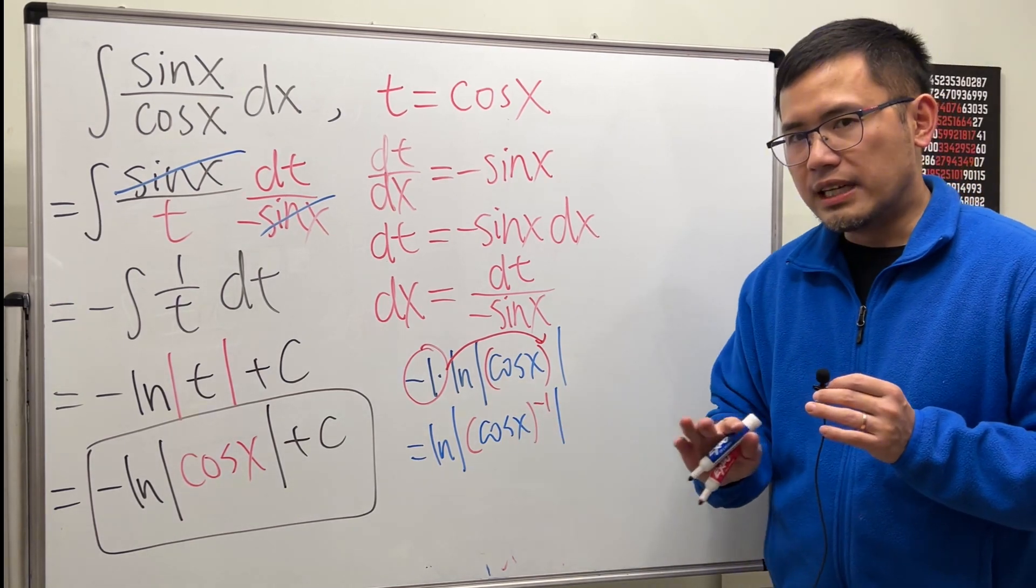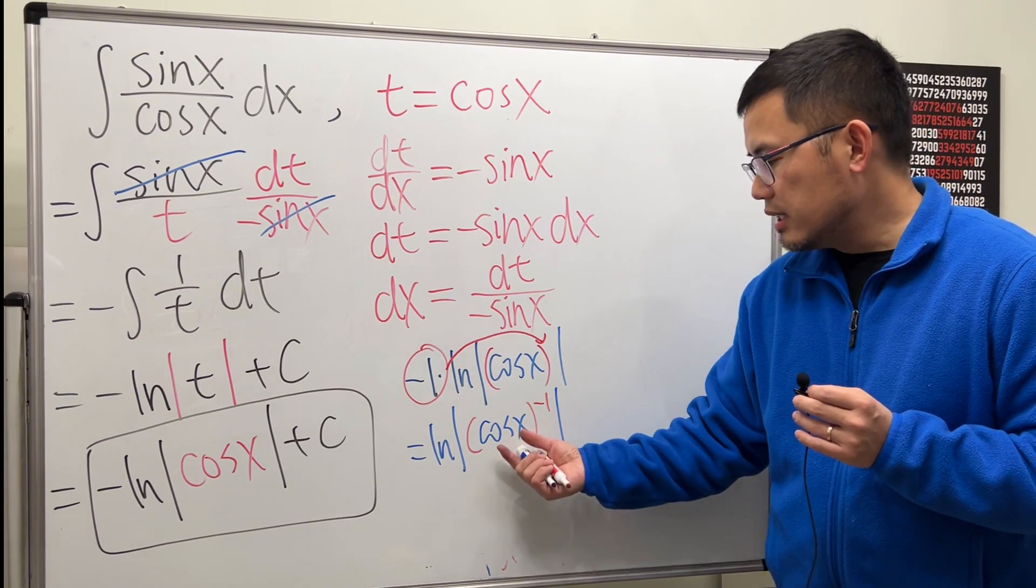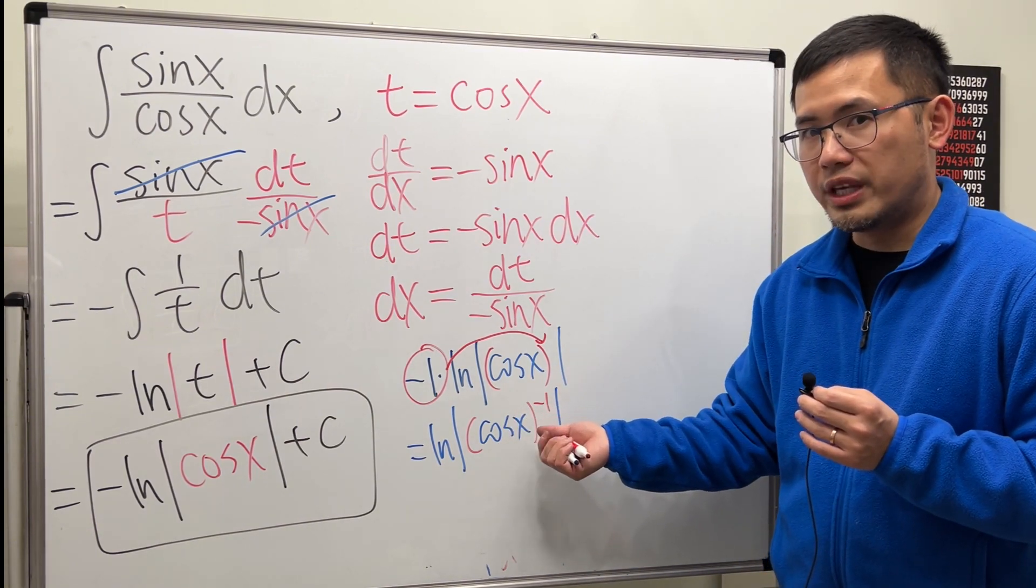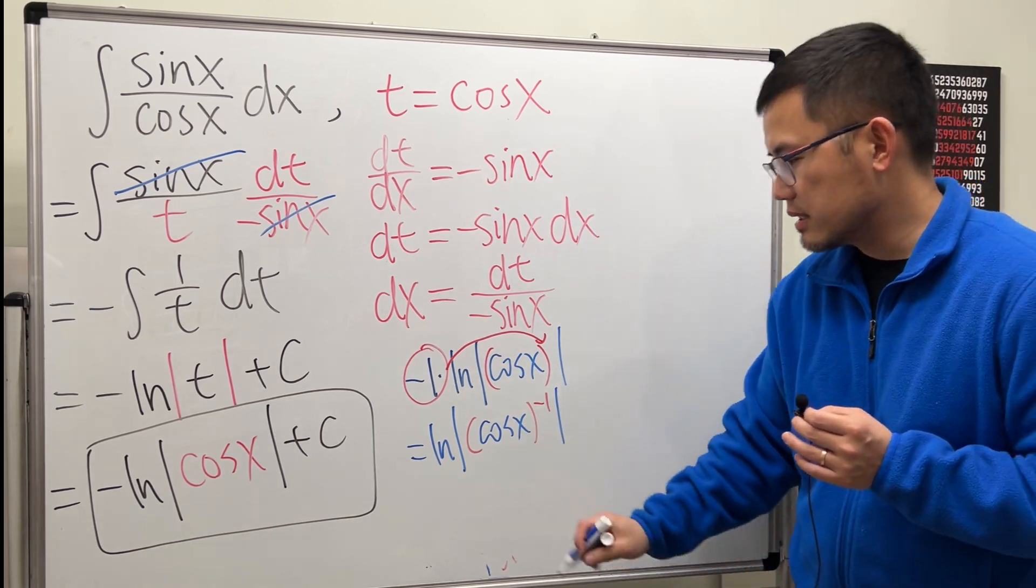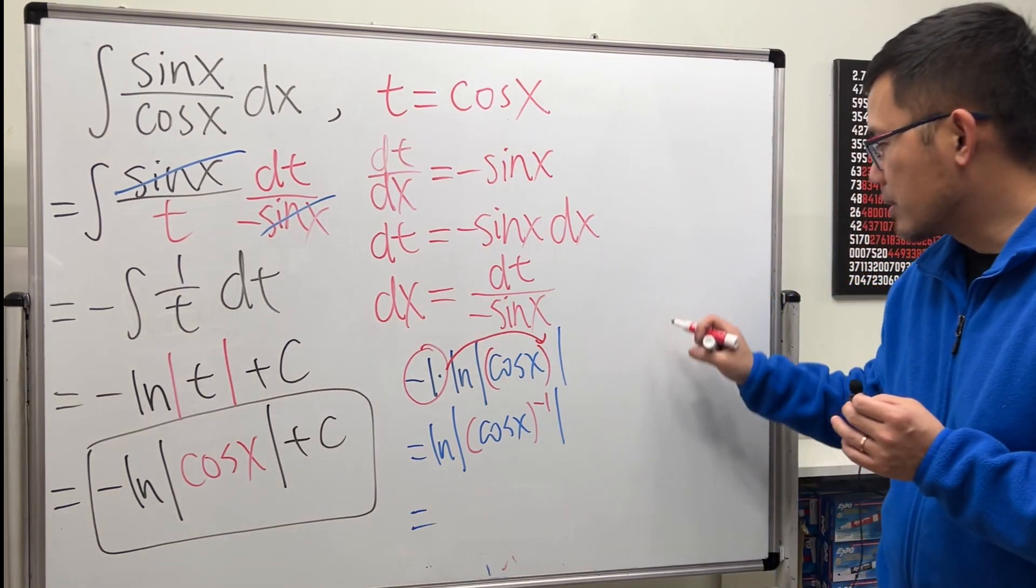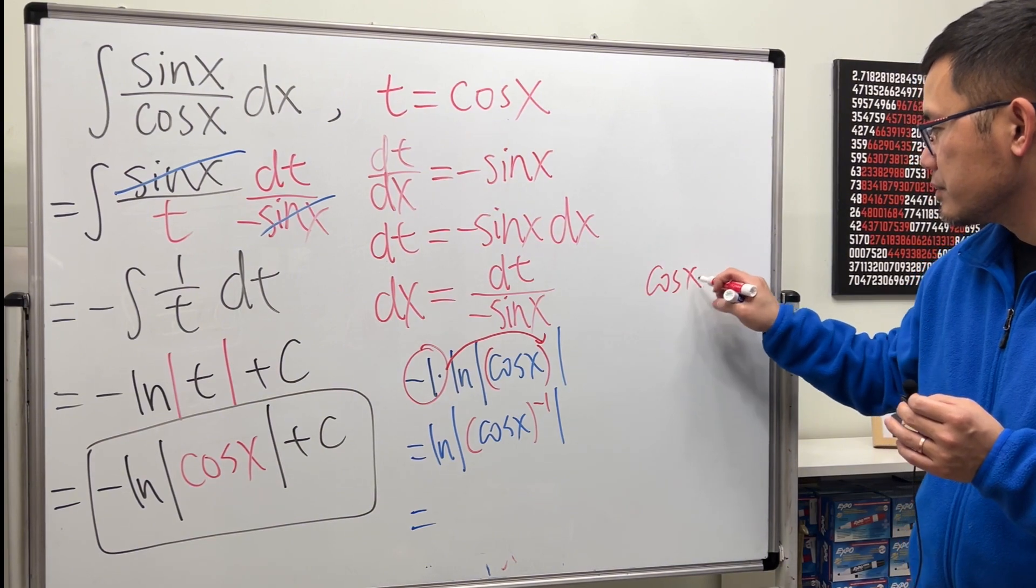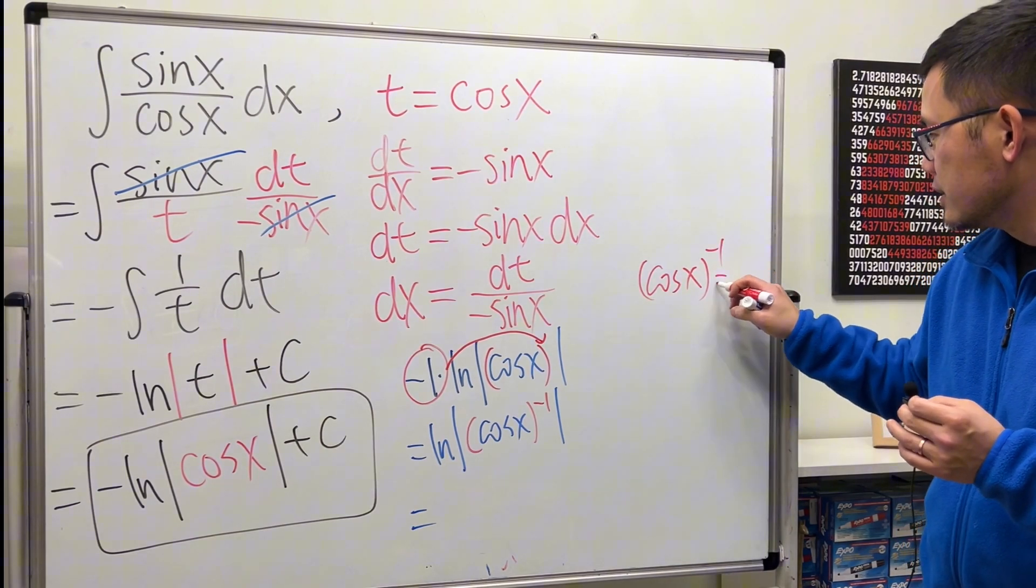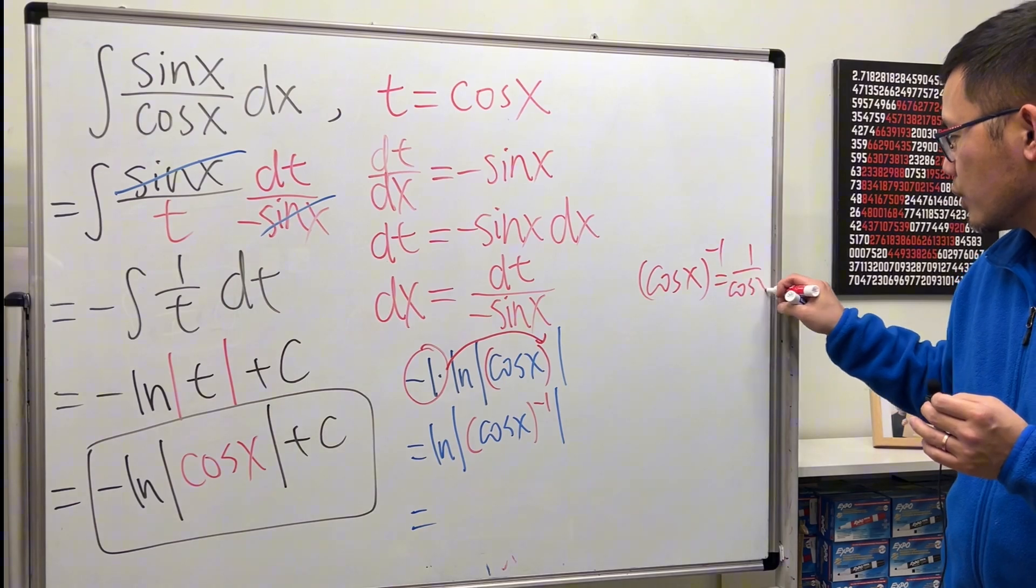And this right here is not the inverse cosine x. This right here is cosine x to the negative 1. So, we get 1 over cosine x. So, again, perhaps I'll just make a note right here.